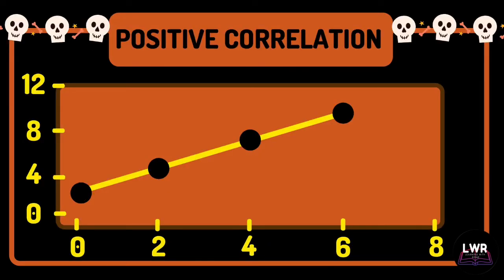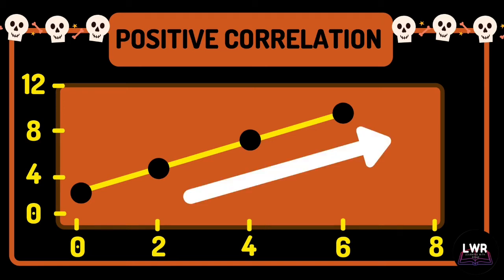We can also determine the relationship of x and y variables by looking at its graph. Here is an example of the graph of a positive correlation. It is considered a positive correlation if the direction of the plotted points in the graph is an upward slope from left to right.